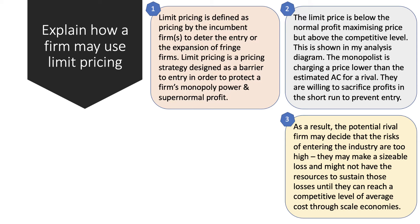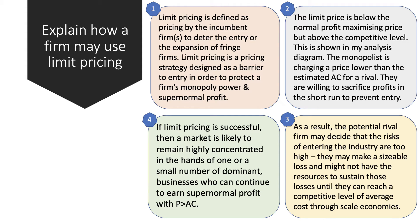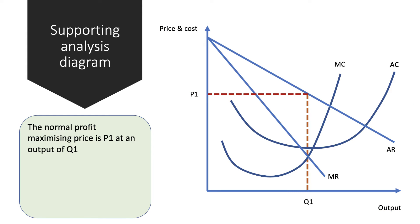As a result, if the limit price is set quite low, the potential entrant may actually decide that the risks of coming to the market are too big — they could make big losses, there could be some sunk costs they might not get back. Therefore if they can't sustain those losses or achieve economies of scale, they probably won't enter the market. If limit pricing is successful, the market is likely to remain highly concentrated in the hands of one or just a few dominant producers, and they can keep earning monopoly or supernormal profits.